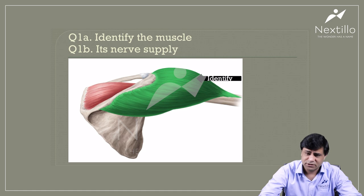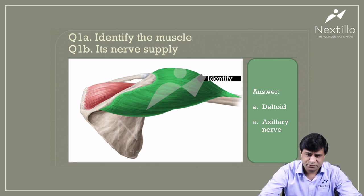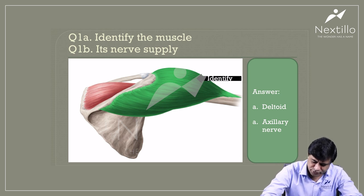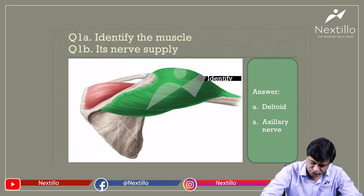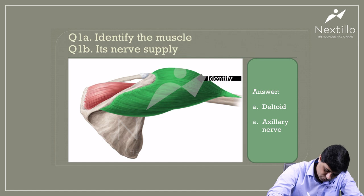This is an easy question. This is the deltoid muscle, and let me revise this muscle for you fast. There you are seeing a bony prominence here — the horseshoe-shaped bony margins that you are seeing — this is a horseshoe-shaped bony margin.